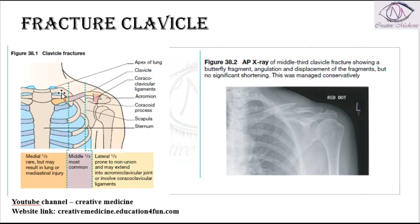The most common site of clavicle fracture is at the junction of the medial two-thirds and the lateral one-third — that is, the middle one-third portion is the most common site of fracture.